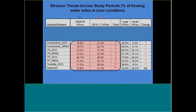The data in the next two slides are from our streams probabilistic monitoring program, where we monitor over two-year periods. We have different two-year periods to compare over time: 2008-2009 was a wet period, and 2010-2011 was a dry period. The percentages in the table represent the percent of flowing water miles in poor condition. For various stressors — conductivity, total nitrogen, total phosphorus, turbidity, and sediment — there was an increasing trend in percent of flowing waters in poor condition from the wet period to the dry period. I think that's a telling trend overall in stressor relationships during wetter versus drier periods.